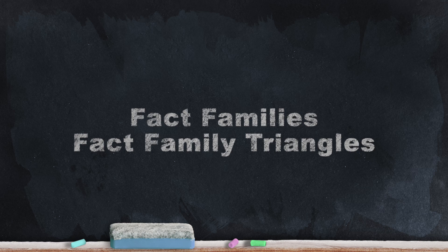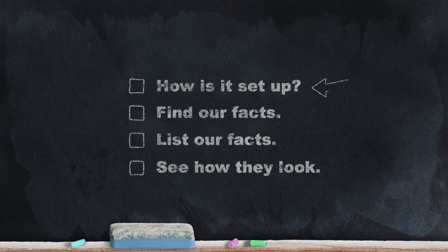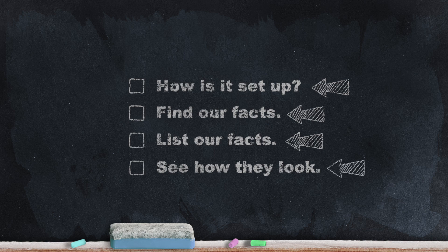Today we're going to start our journey into fact families. We'll look at how a fact family triangle is set up, find our facts, list our facts, and then see what they look like using a number line, tens frame, and tally marks.